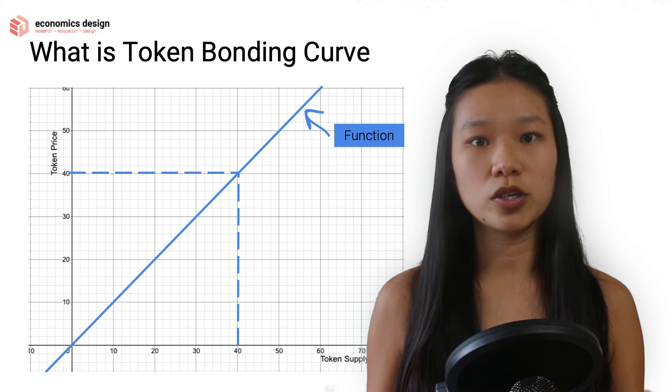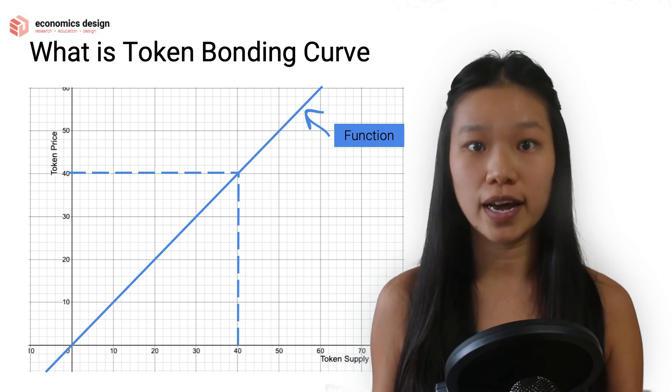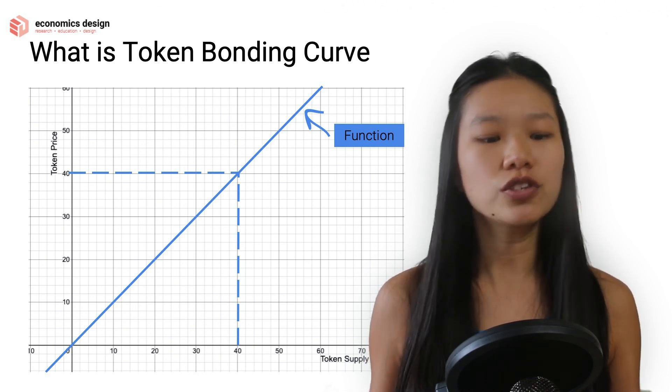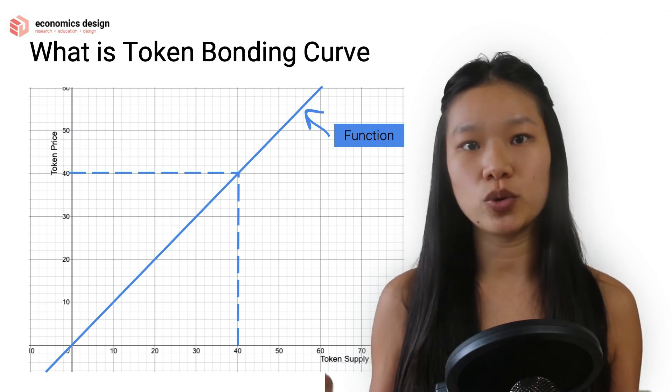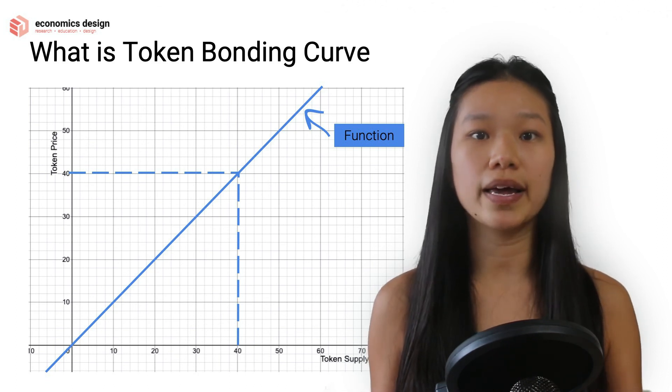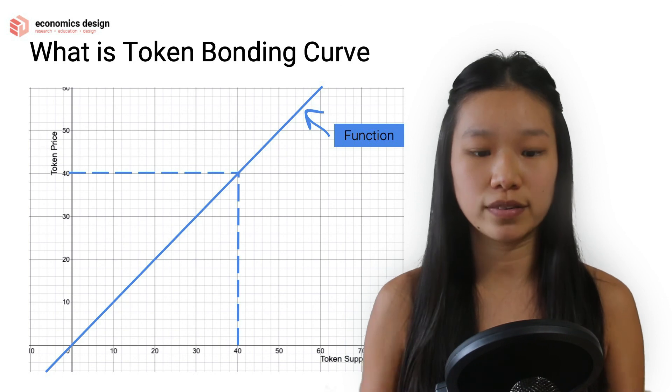Token bonding curves is just a line — a mathematical curve that shows the relationship between the token supply and the token price.